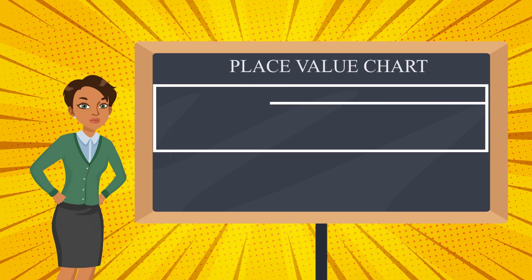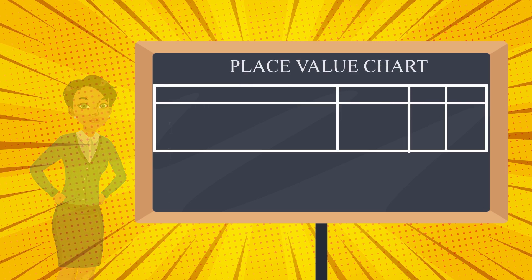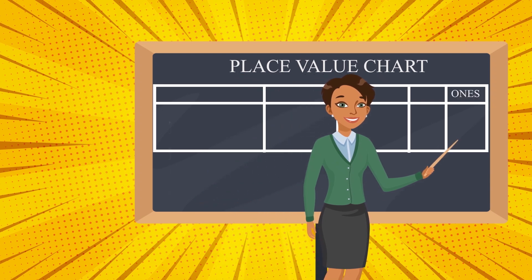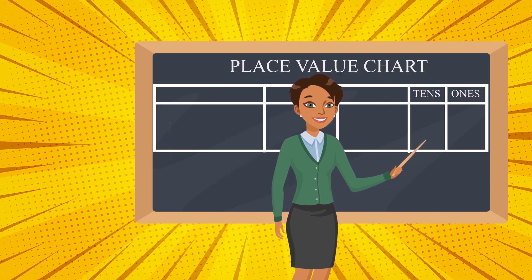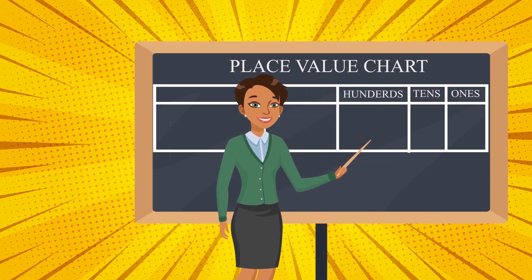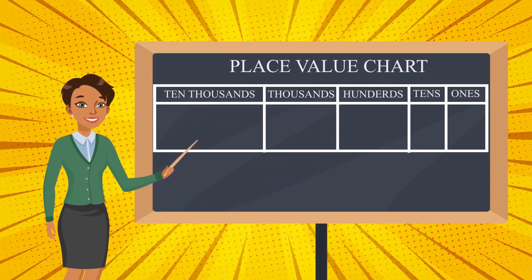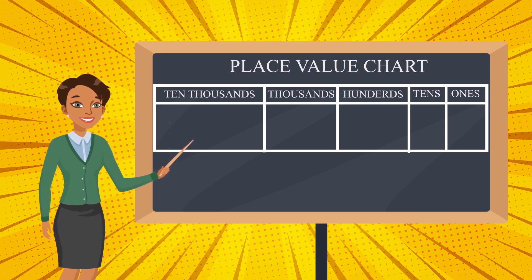This is the place value chart. We have the places: ones, tens, hundreds, thousands, and ten thousands — and still we have many more. But as of now, in this video, we are learning up to the ten thousands place.